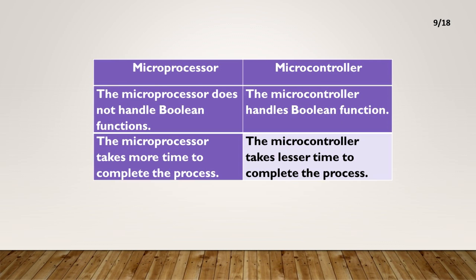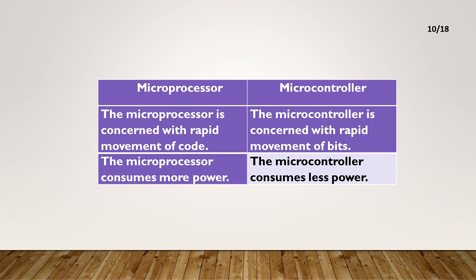The microprocessor does not handle boolean functions. The microcontroller handles boolean functions. The microprocessor takes more time to complete the process. The microcontroller takes lesser time to complete the process. The microprocessor is concerned with rapid movement of code. The microcontroller is concerned with rapid movement of bits.